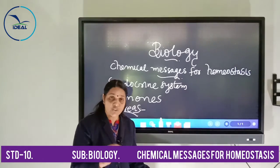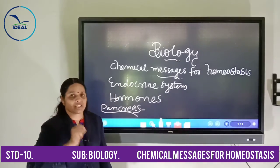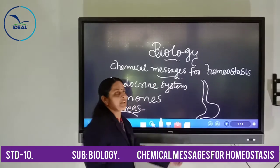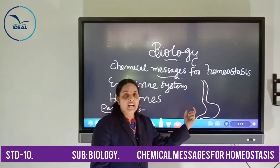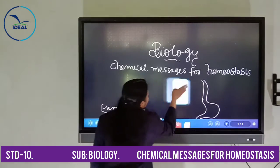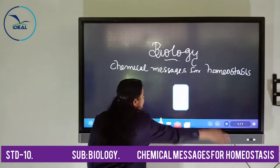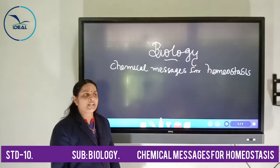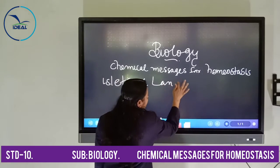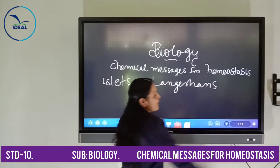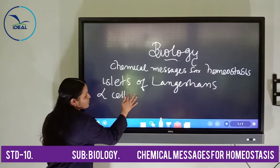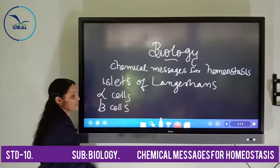The pancreas is located in between the stomach and duodenum as a leaf-like structure. Suppose this is the stomach — in between the stomach and duodenum is the presence of the pancreas as a leaf-like structure. It consists of a group of cells known as the Islets of Langerhans. These Islets of Langerhans again consist of two types of cells: alpha cells and beta cells.